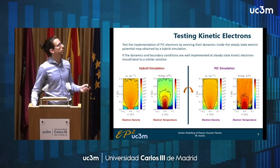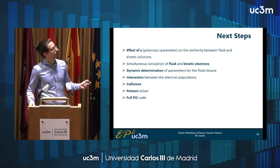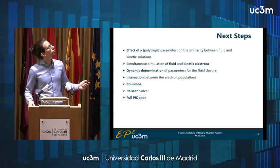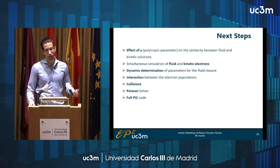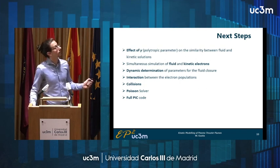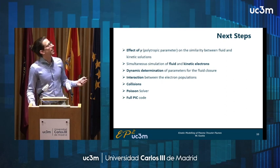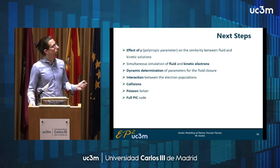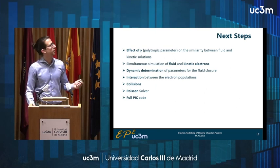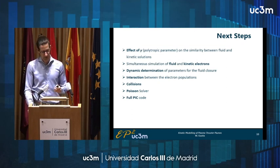Looking at the next steps: first I would like to further study the effect of the gamma parameter γ and how it affects the similarity between the fluid and kinetic solutions. Then, further in the future, I should start working on a code capable of simultaneously evolving fluid and particle electrons, and use the particle electrons for dynamic determination of the polytropic parameter for the fluid ones. Even further in the future, there is the study of the interaction between these two electron species and including collisions for the particle electrons. And then, start thinking about a Poisson solver for a full PIC code, which will lead us to the capability of using EP2+ as a full PIC code.